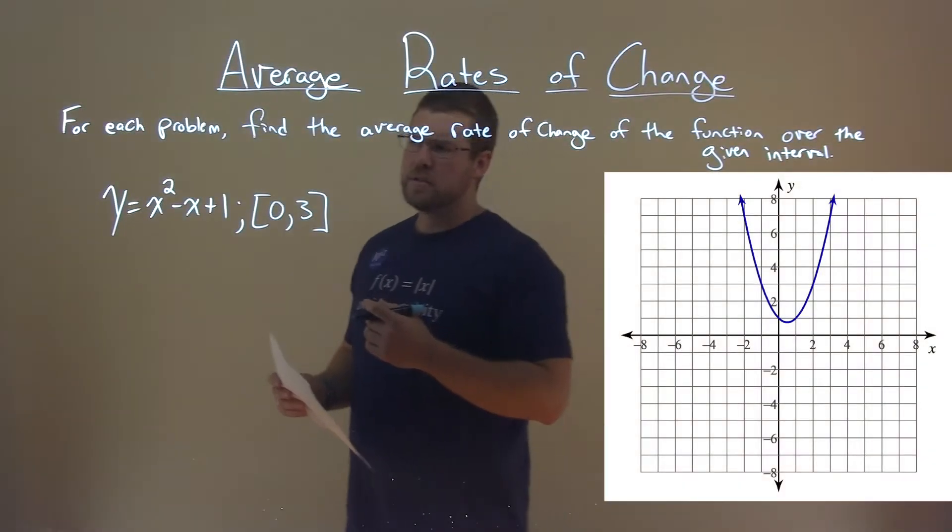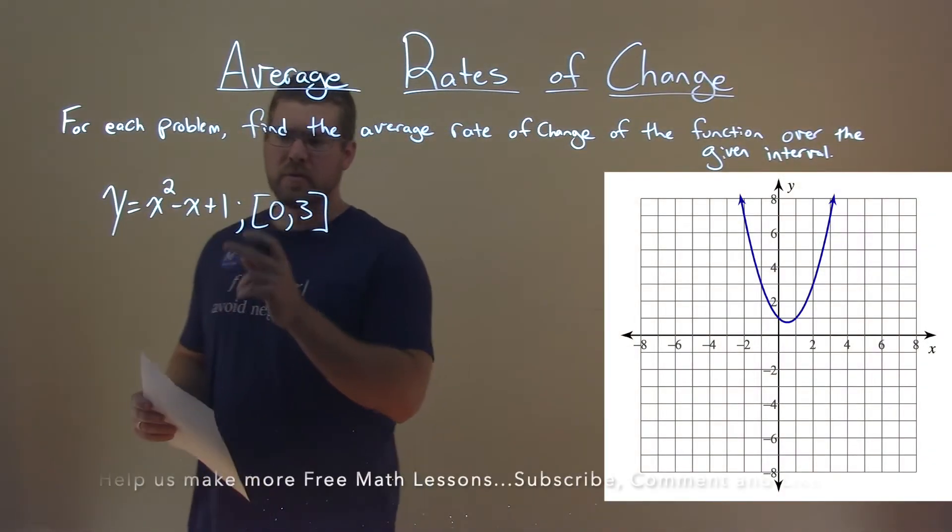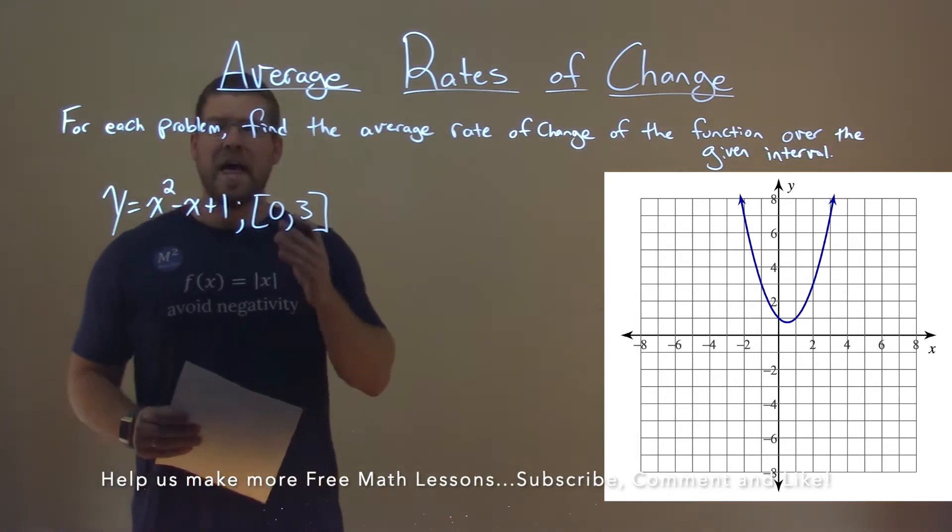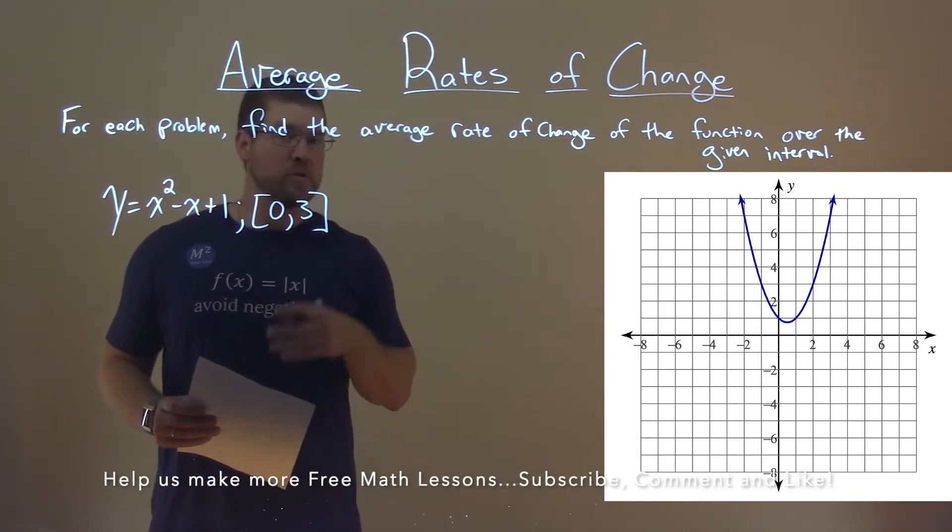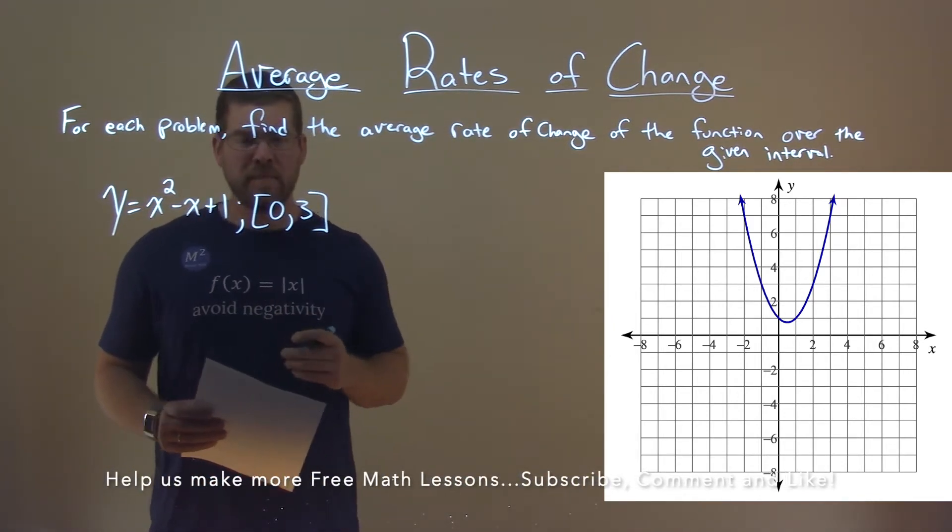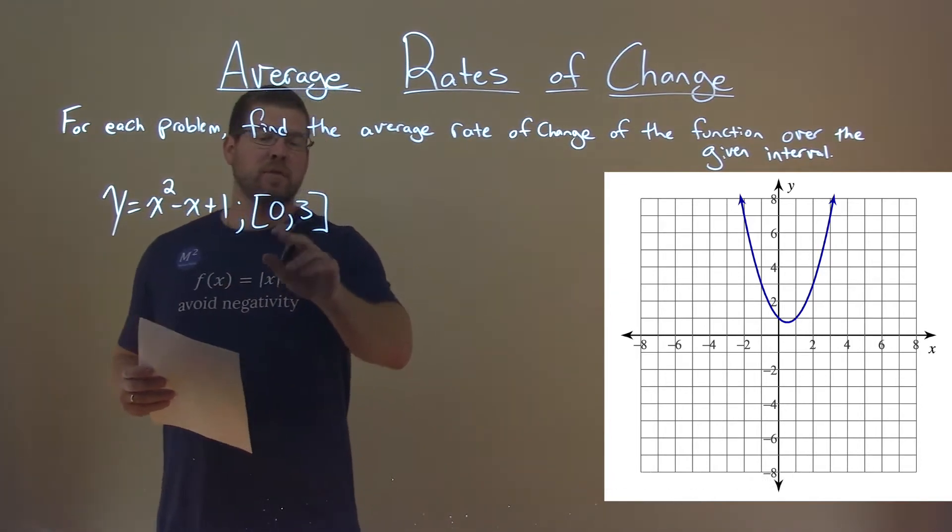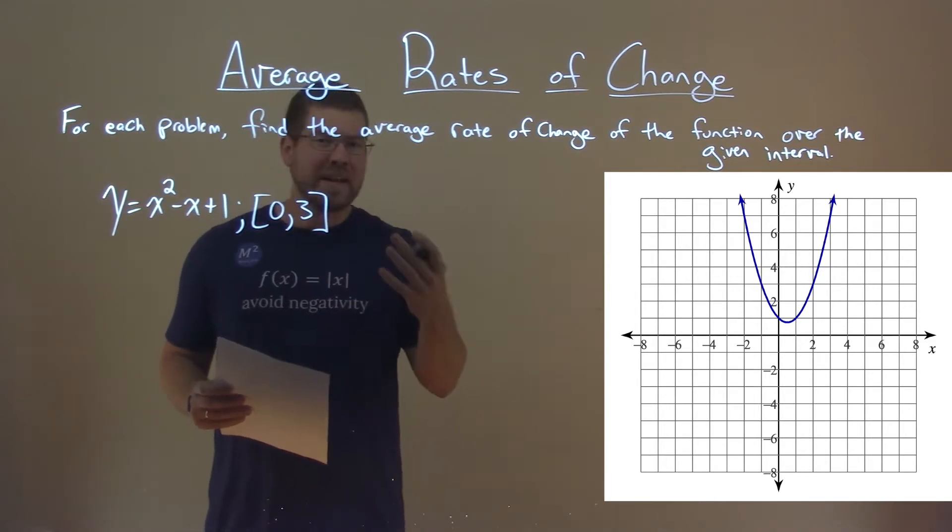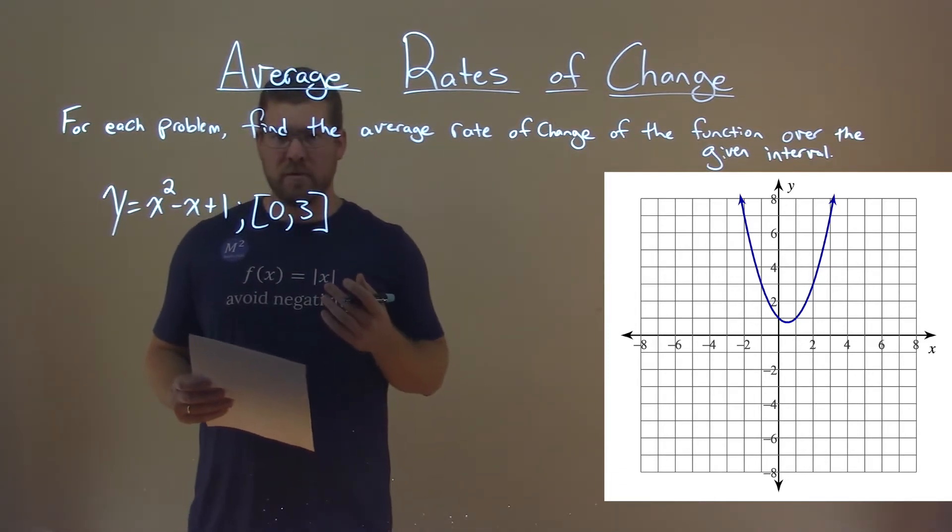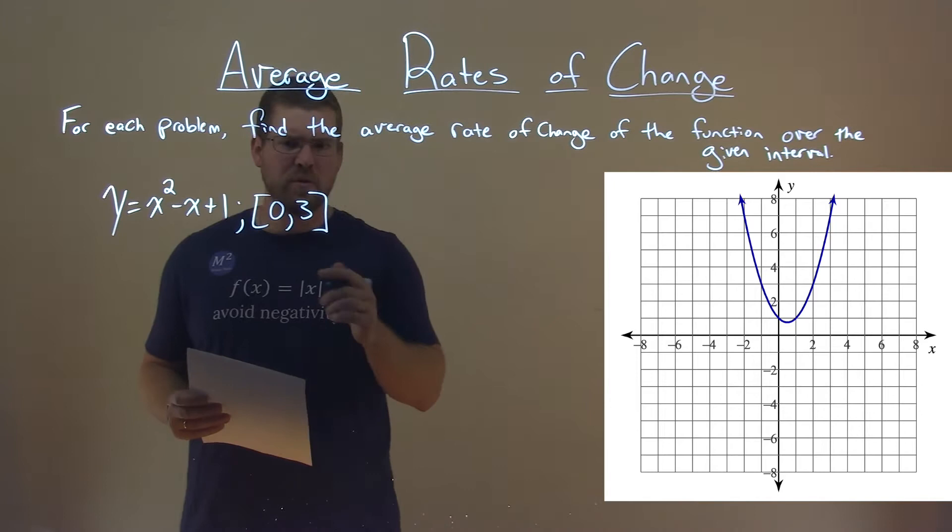We're given our function right here, y equals x squared minus x plus 1, and we have to find the average rate of change over the interval from 0 to 3, and we have our function graphed right there. When we find the interval from 0 to 3, those are the x values, and we need to find the corresponding y values for them. So let's go do that.